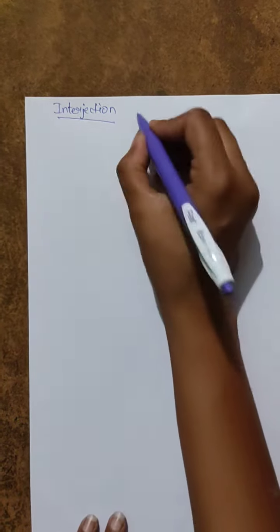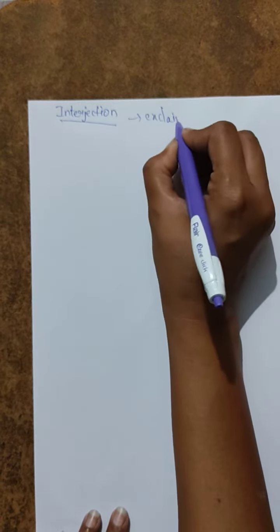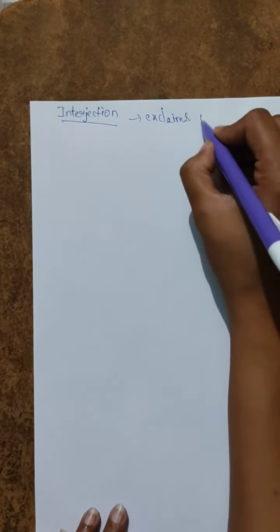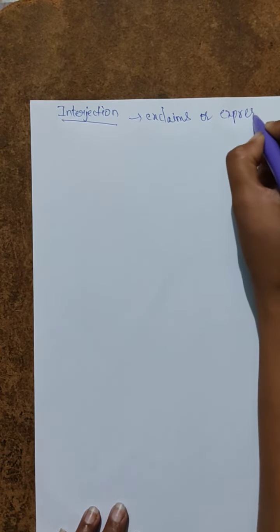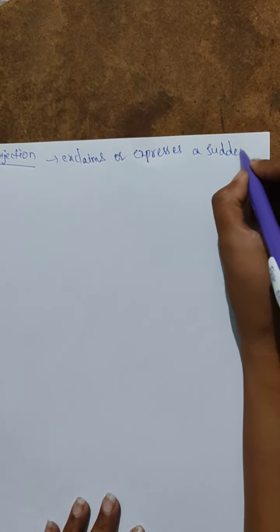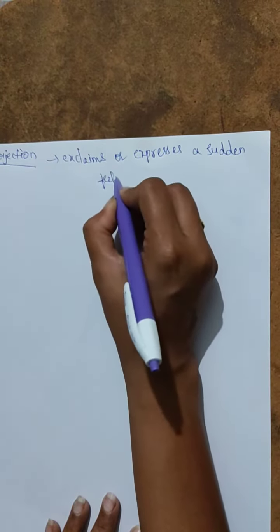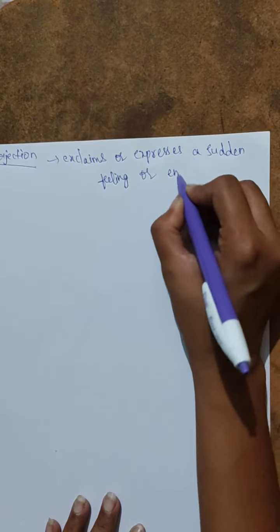And the last one is interjection. So, what is an interjection? Interjection is nothing but it is a word which exclaims or expresses a sudden feeling or emotion.